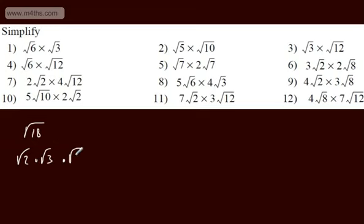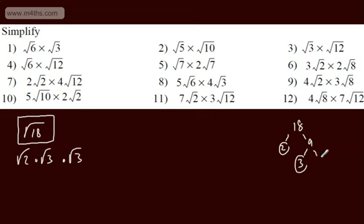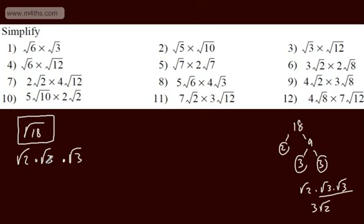Alternatively, we could split this up and write root 6 as root 2 multiplied by root 3, then multiply by root 3. If you've gone this way, you'd look at 18, say 18 divided by 2 gives 9, divided by 3 gives 3, so we'd have root 2 times root 3 times root 3. That gives us 3, and we end up with 3 root 2. Alternatively, you can split the 6 into root 2 times root 3 — exactly the same result.